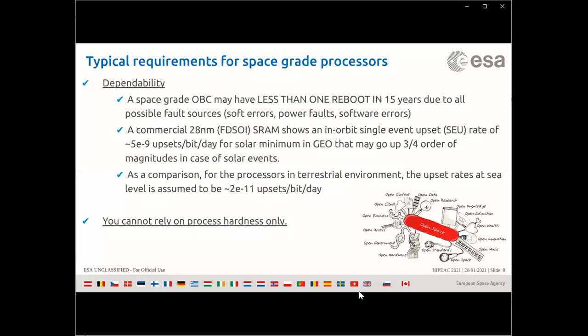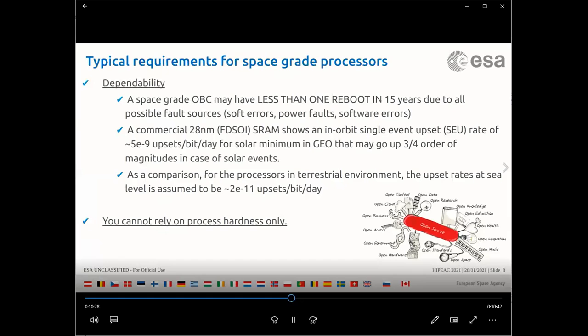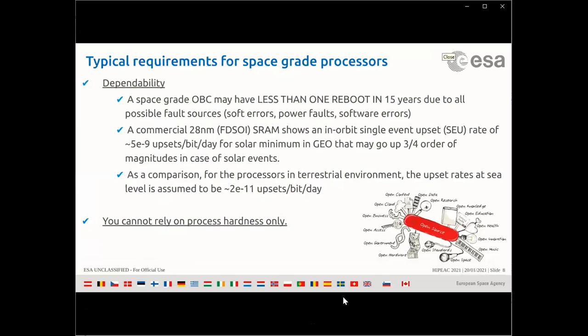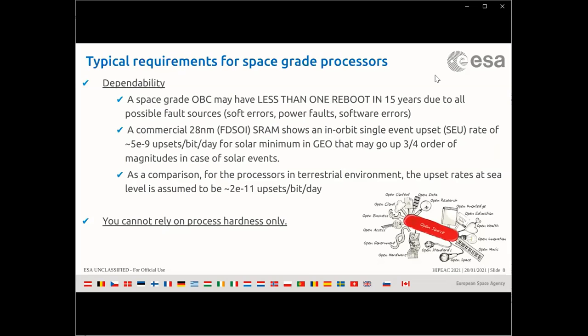As a comparison, if you take a commercial 20 nanometer FDSOI — which is very good in terms of radiation — on orbit you have a single event upset rate on the order of 5e-9 upset bits per day, which may be up to two upset bits per day per device in case of solar events. For processors in interested environments the upset rate is assumed to be several orders of magnitude worse. The point is: you cannot rely on process hardness only.